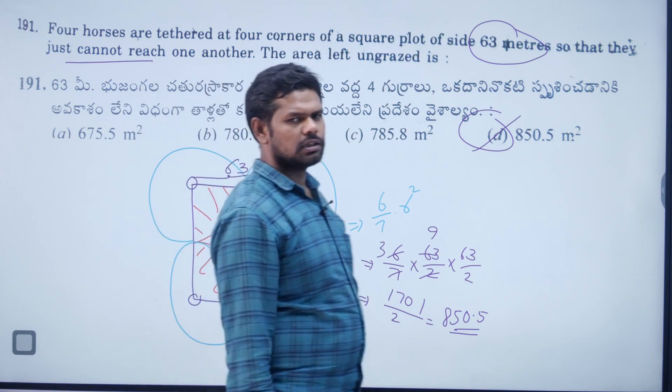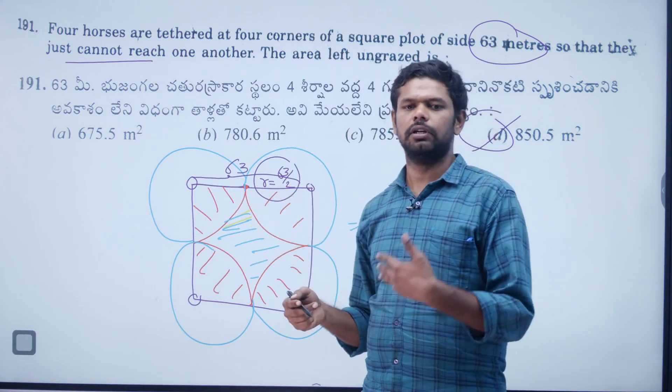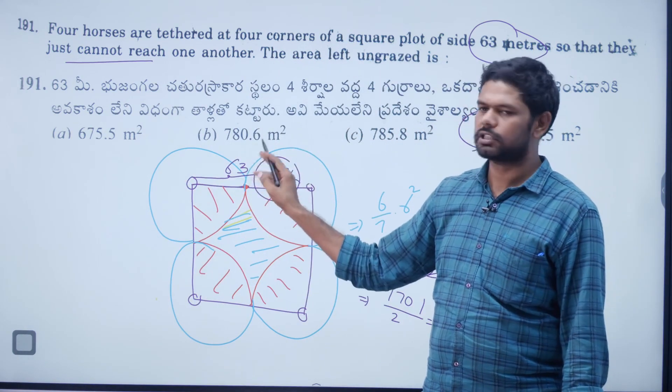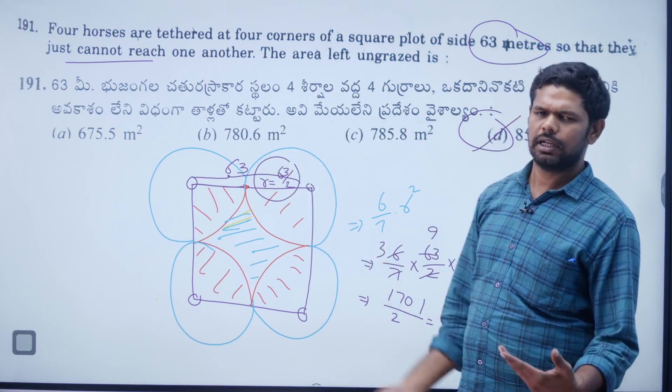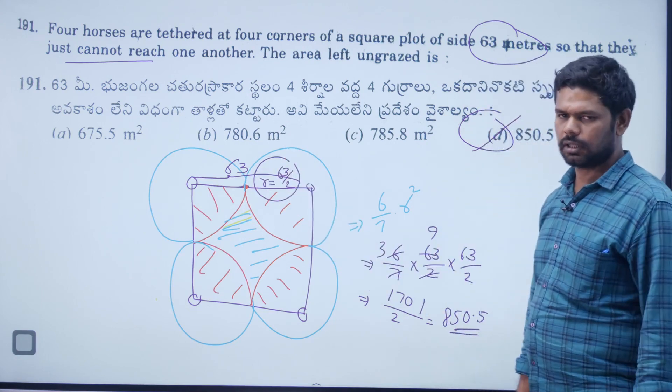All square-side problems can be solved directly using the formula 3/14 × a². Here: 3/14 × 63² gives the answer directly.